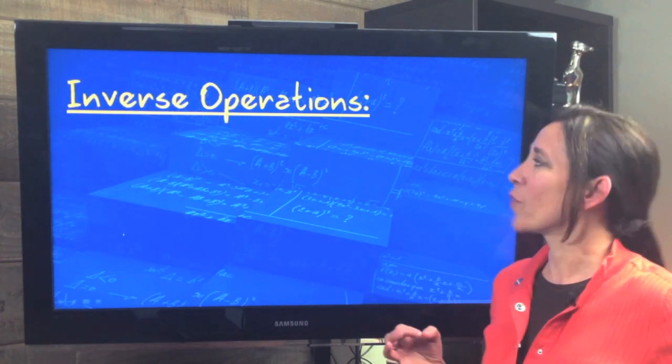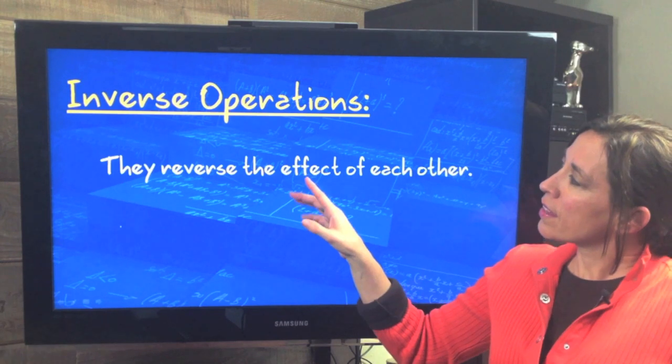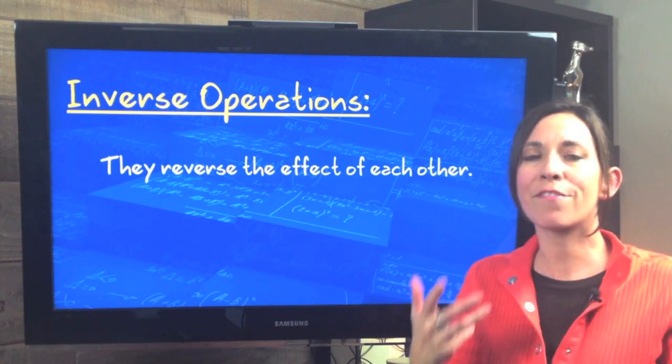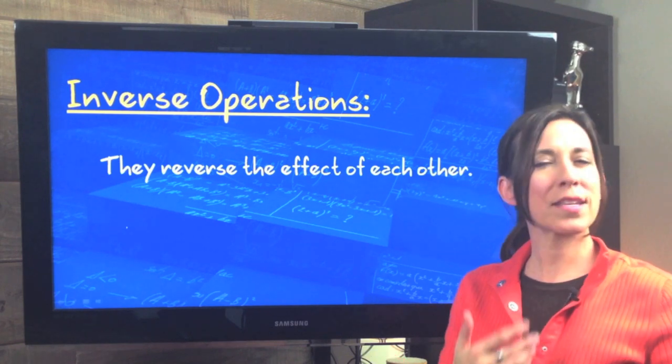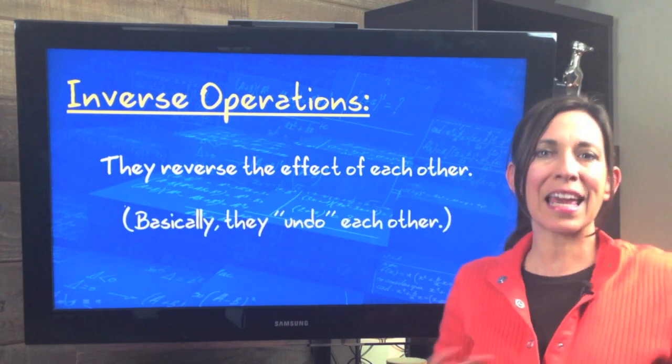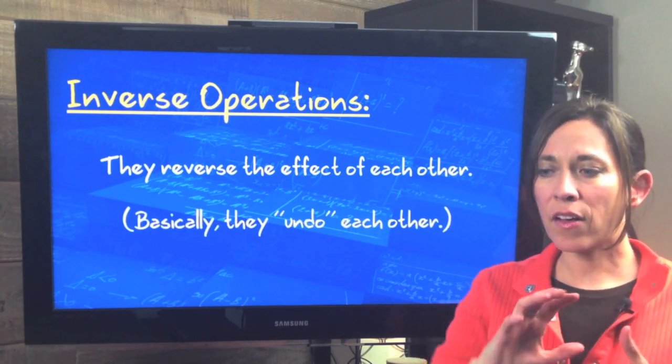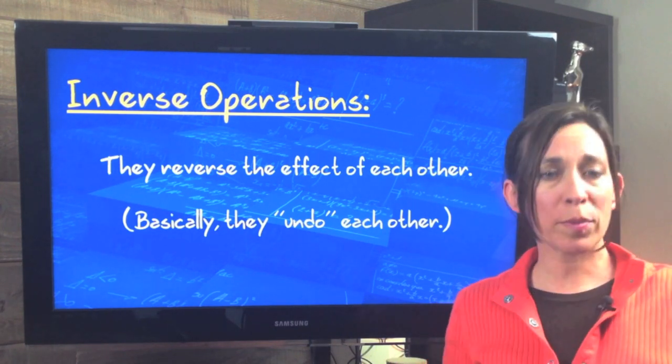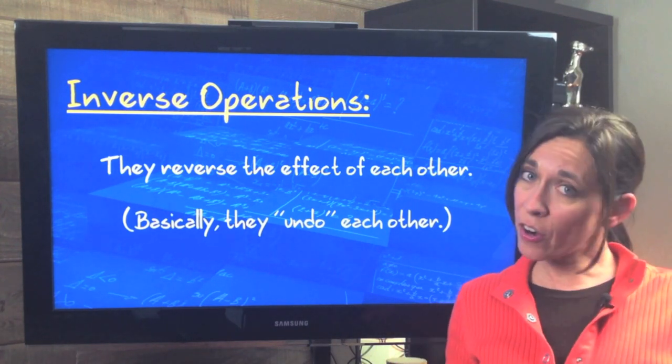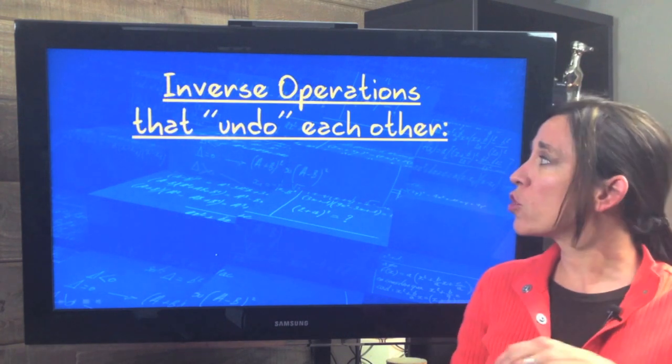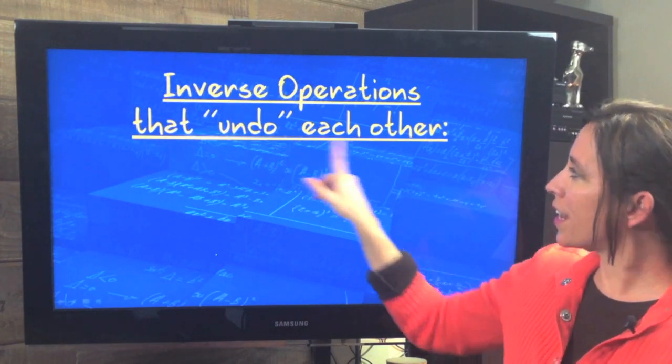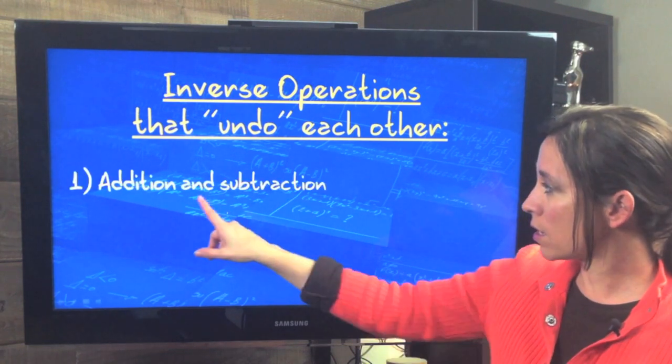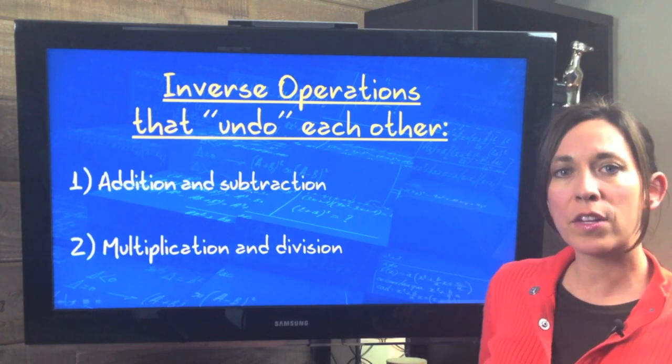But what makes them inverse? Technically, definition of inverse means that they reverse the effect of each other. But what does that mean to you and me? Basically, they undo each other. Think of addition and subtraction. They're paired up, they're opposites. Multiplication and division are paired up, they're opposites. So those are the two groups of inverse operations that undo each other that we're going to use when solving linear equations. Addition and subtraction, and multiplication and division.